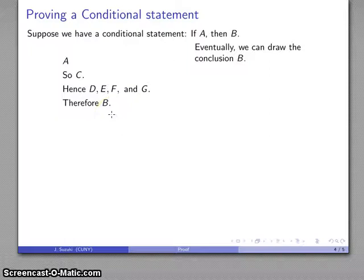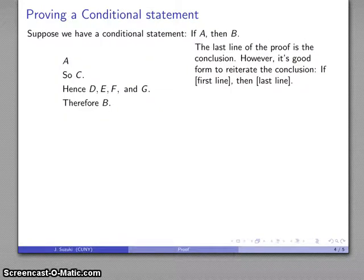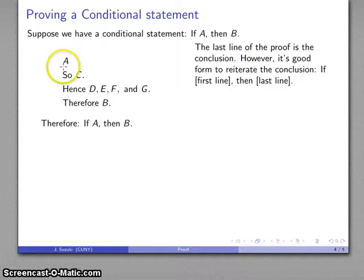And at this point, I'm done because B, the last line, the last thing I say in the proof, is our conclusion, which is what we want for our proof. However, it's fairly good form to reiterate our conclusion in the form if first line, then last line. So if A, then B, and that is what I have in fact proven.